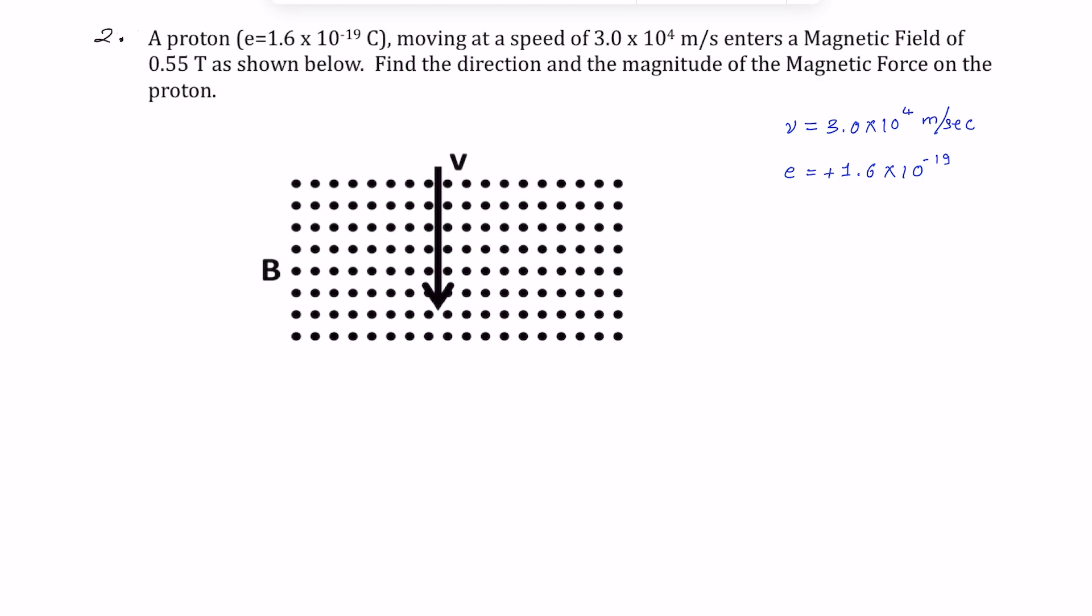And the magnetic field B, which is 0.55 tesla. The magnetic field is coming out of the page because it's dot. So the magnetic field is coming out of the page. The proton enters like this and encounters a magnetic field which is coming out of the page.